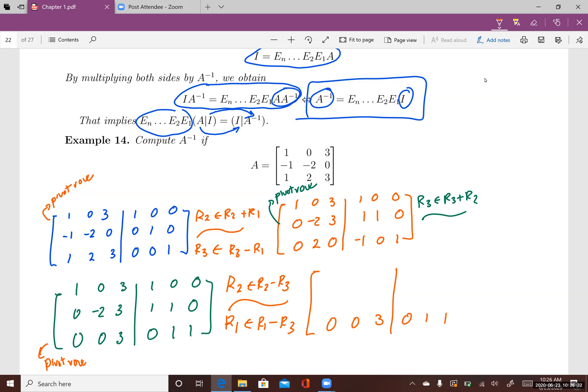Row 2 minus row 3: 0 minus 0 is 0, negative 2 minus 0 is negative 2, 3 minus 3 is 0, 1 minus 0 is 1, 1 minus 1 is 0, negative 1 minus negative 1. Row 1 minus row 3: 1 minus 0 is 1, 0 minus 0 is 0, 3 minus 3 is 0, 1 minus 0 is 1, 0 minus 1 is negative 1, 0 minus 1 is negative 1.